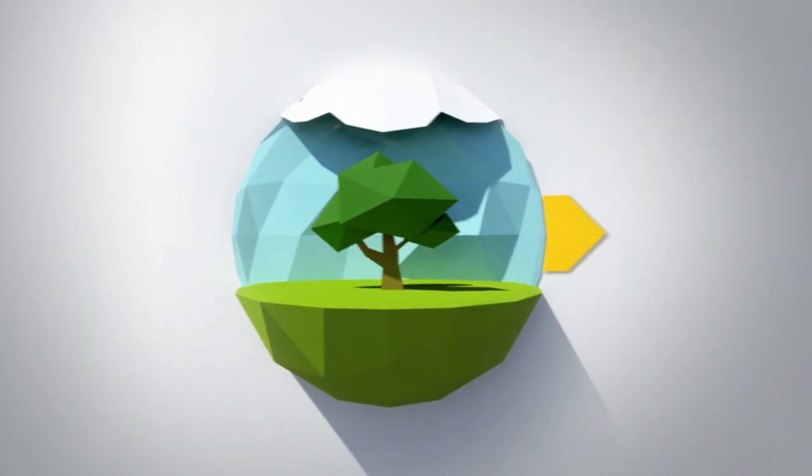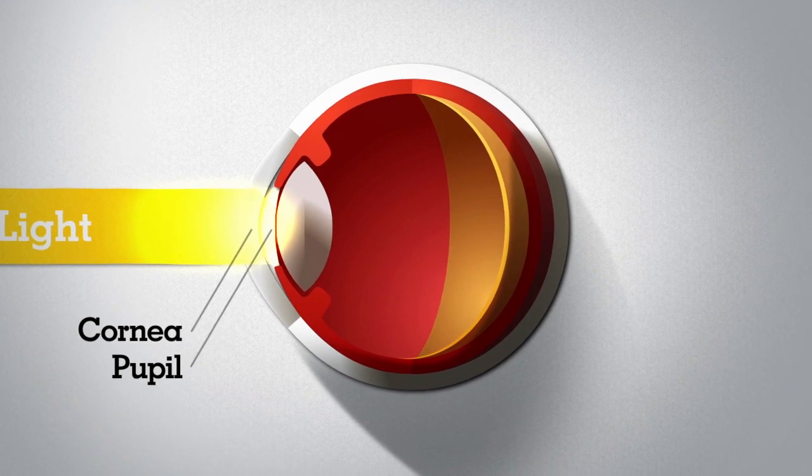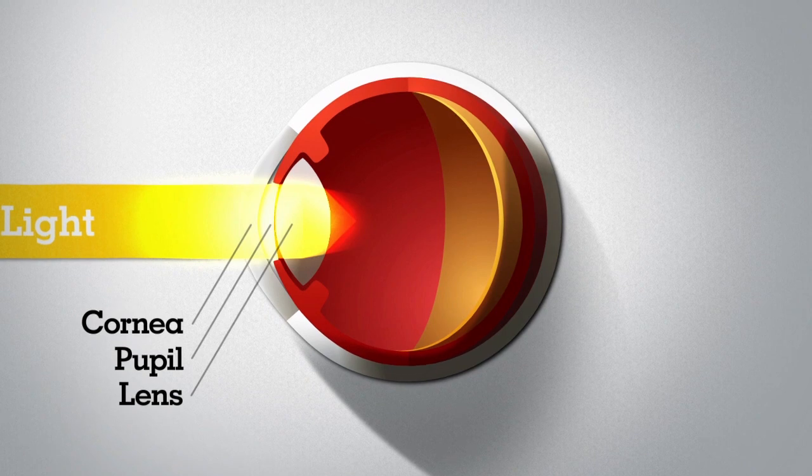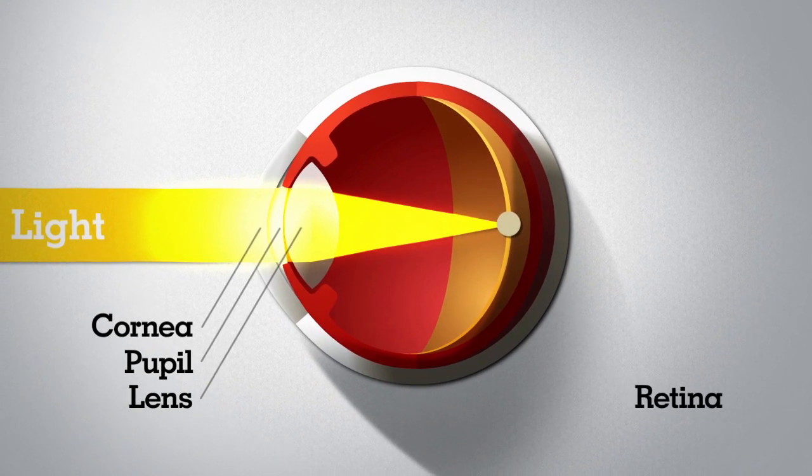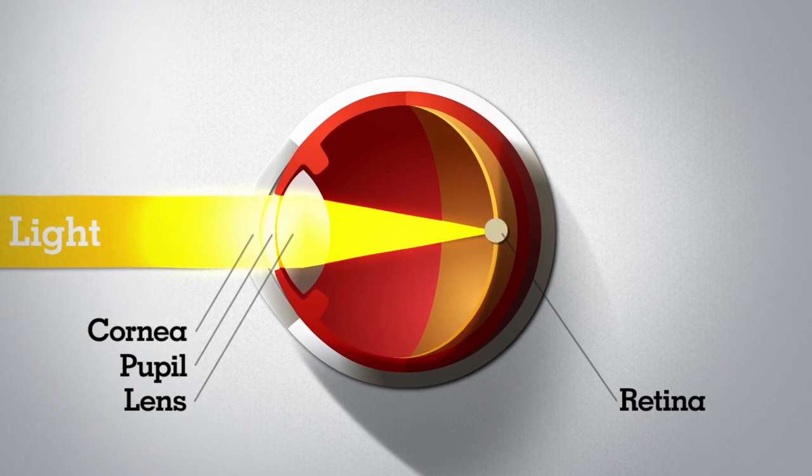When you look at the world, light goes through your cornea, into your pupil, the hole in the colored part of your eye. Then it passes through the lens, which focuses the light into a point on your retina, the light-sensitive lining at the back of the eye that works sort of like film in a camera.